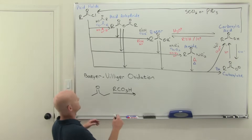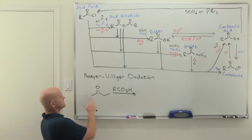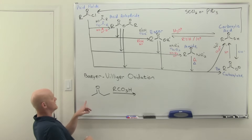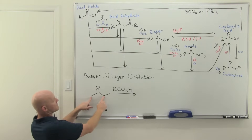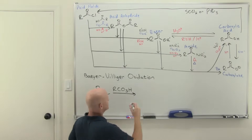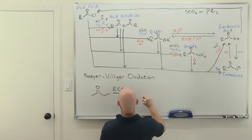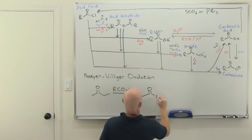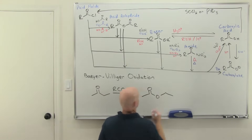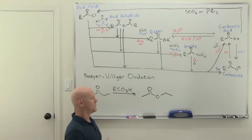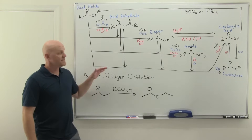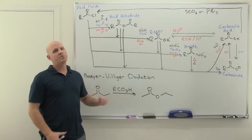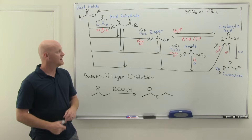What you have to remember is that we're going to insert an oxygen on one side of the ketone — whichever side is more substituted. So we have a primary carbon here and a secondary carbon here, and we're going to insert it on that side to get the analogous ester. That's our first review reaction for synthesizing an ester.